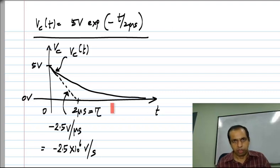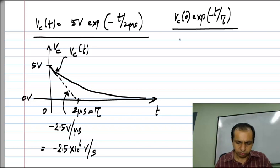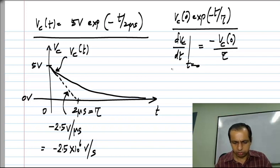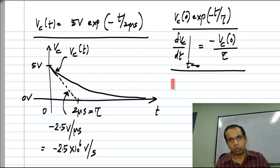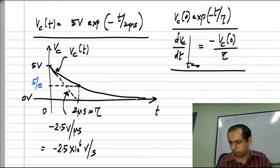I am showing this as a numerical example, but if you use the general form of the expression Vc of zero exponential minus t by tau, then the initial slope is minus Vc of zero by tau. So, if you keep on continuing over that line and go down by an amount equal to Vc of zero, you will reach tau. And at t equals tau if you look at the voltage, you will be easily able to calculate that this is five by e where e is the natural exponent.